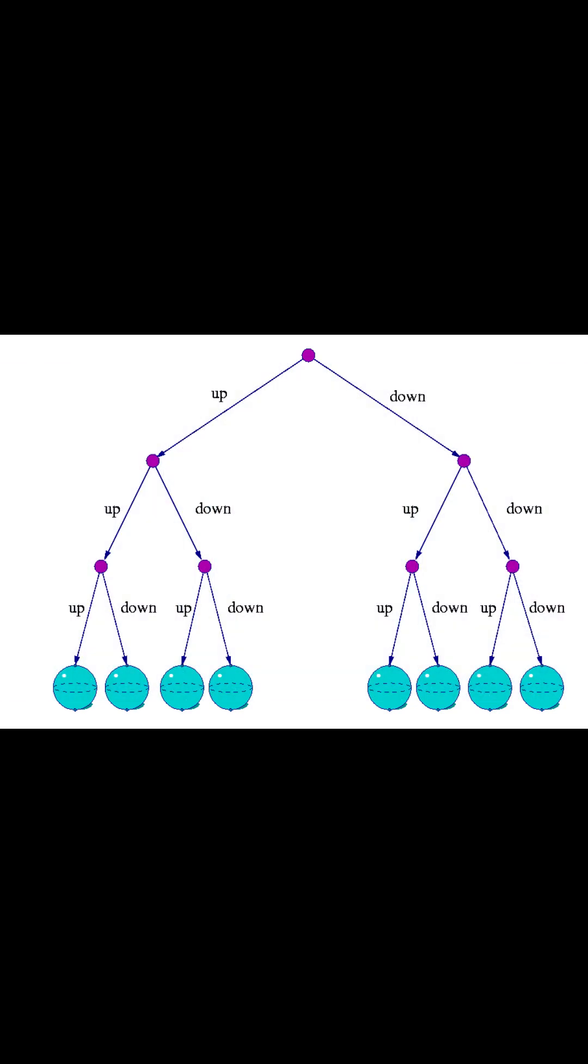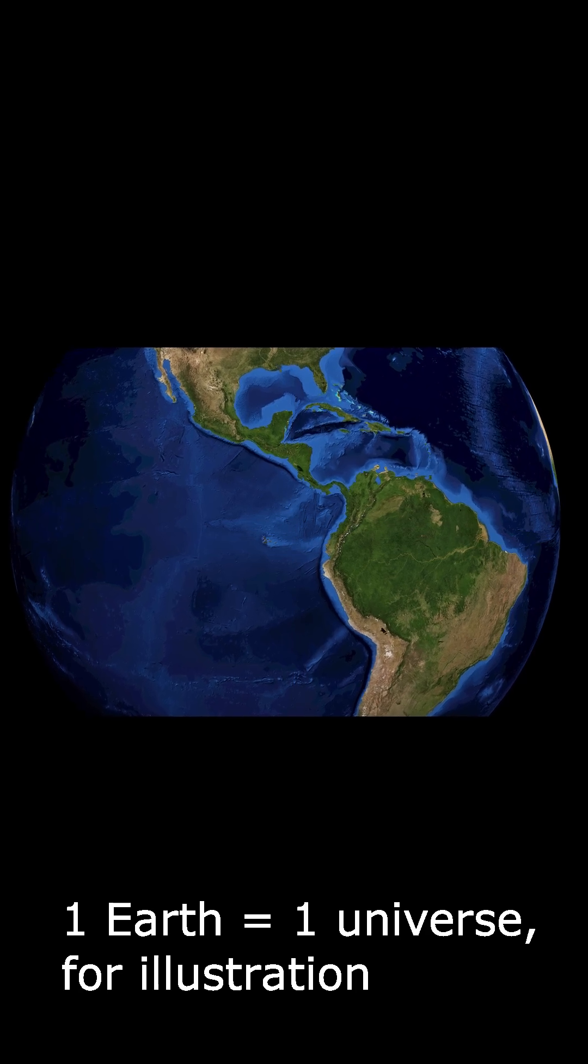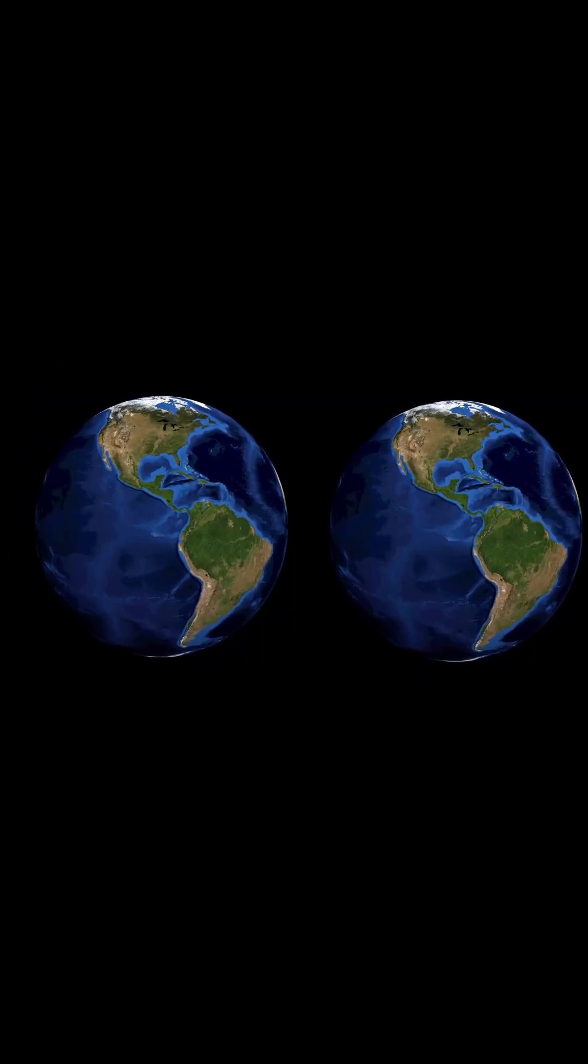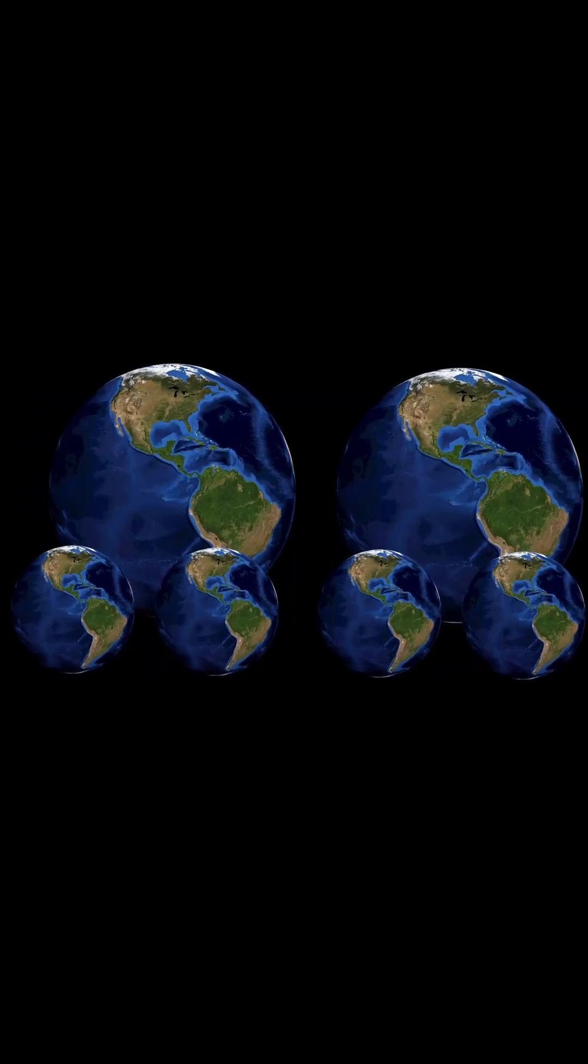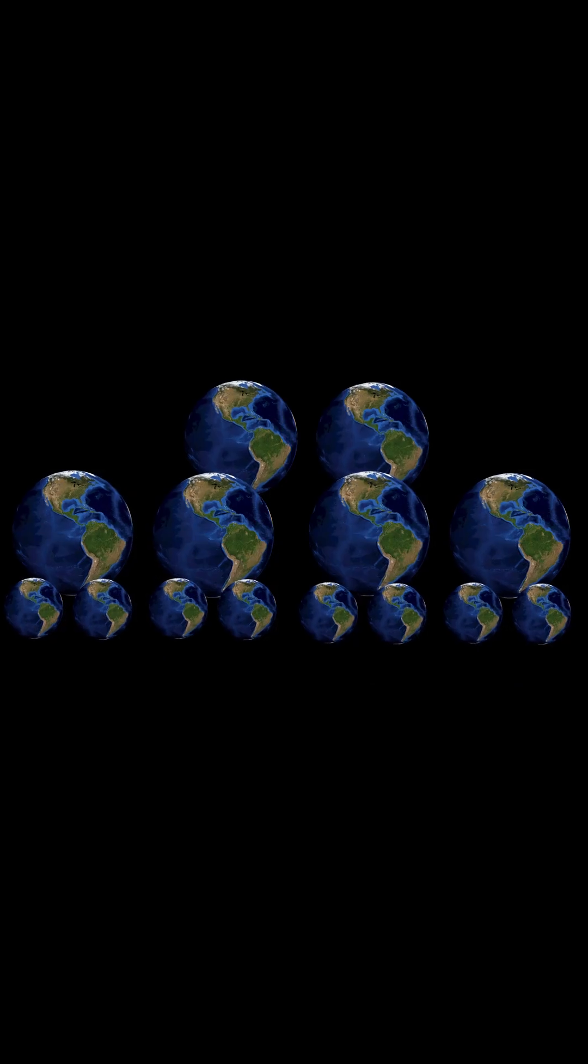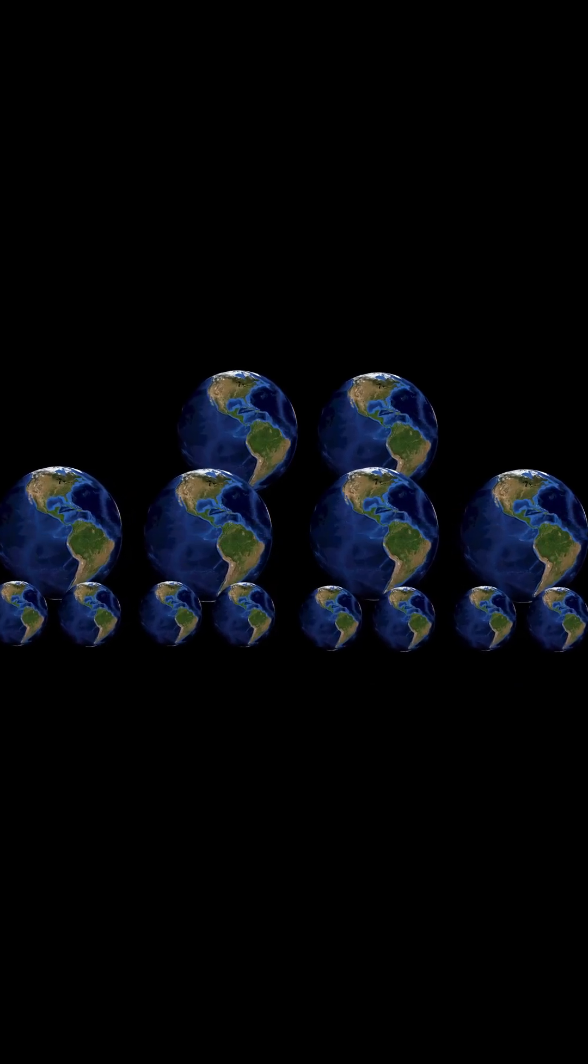Everett's many-worlds theory is mathematically clean, but it raises more questions. Why only certain branches? Why can the cat only be dead or alive? Why can't we test it?